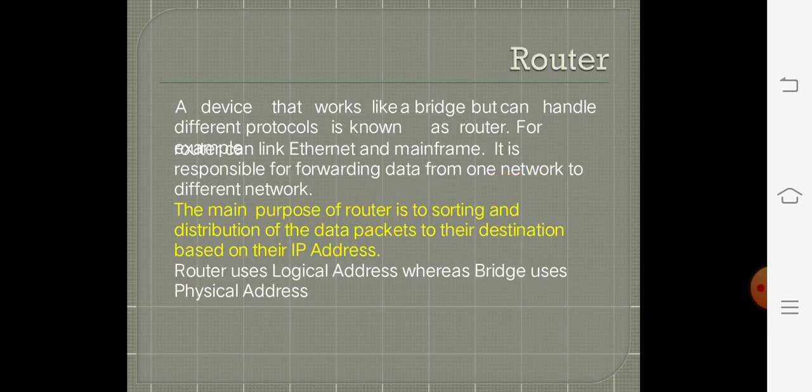The next one is the router. A device that works like a bridge but can handle different protocols is known as a router. For example, consider an Ethernet and a mainframe. The router is responsible for forwarding data from one network to a different network. It is used to sort and distribute data packets to the destination based on their IP address.